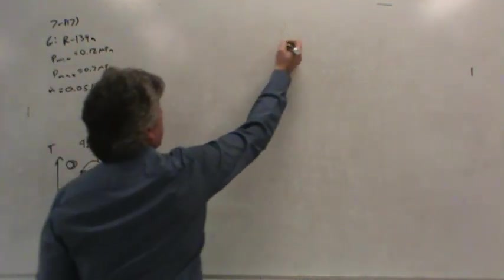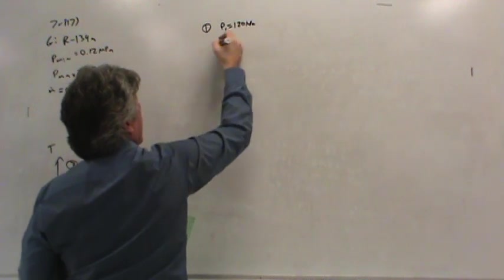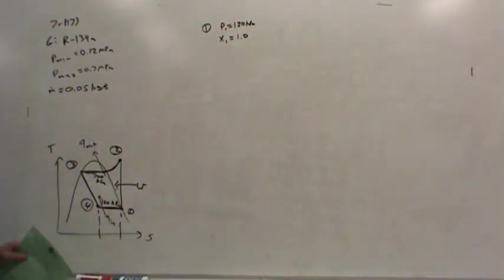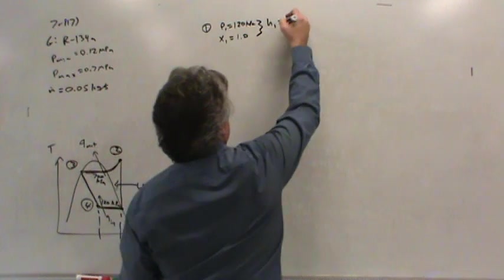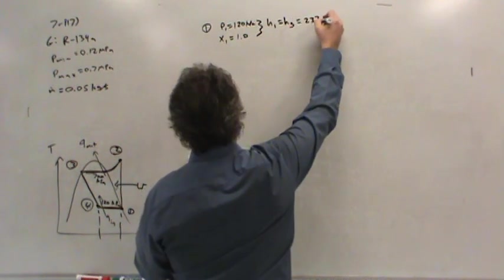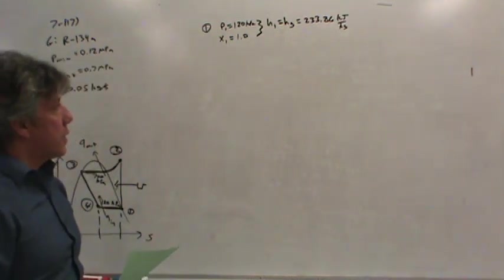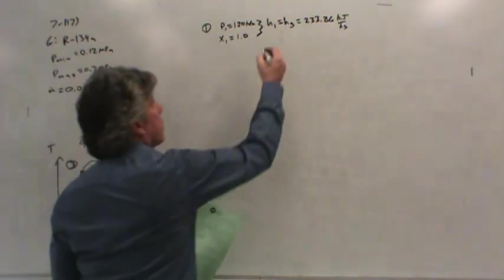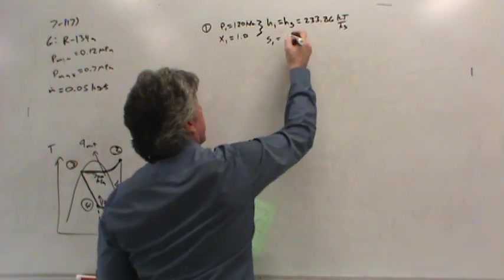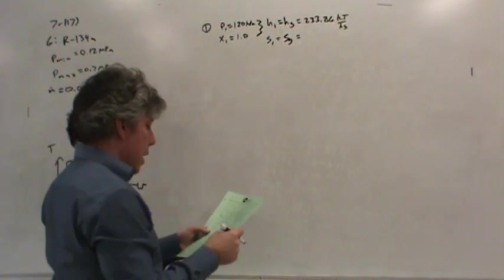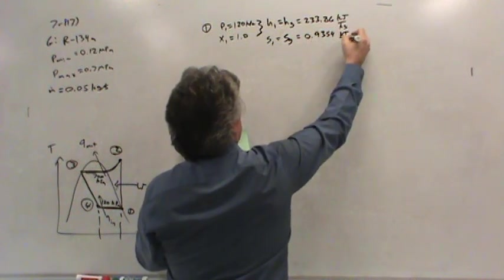If we begin at state one, we know the pressure is 120 kilopascals. We know that the quality is saturated vapor, so the quality is 1.0. The enthalpy in that state is the enthalpy of saturated vapor Hg, which is 233.86 kilojoules per kilogram when we look up 120 kilopascals and Hg in the R134A saturated tables. The entropy S1 is simply Sg, 0.9354 kilojoules per kilogram per kelvin.